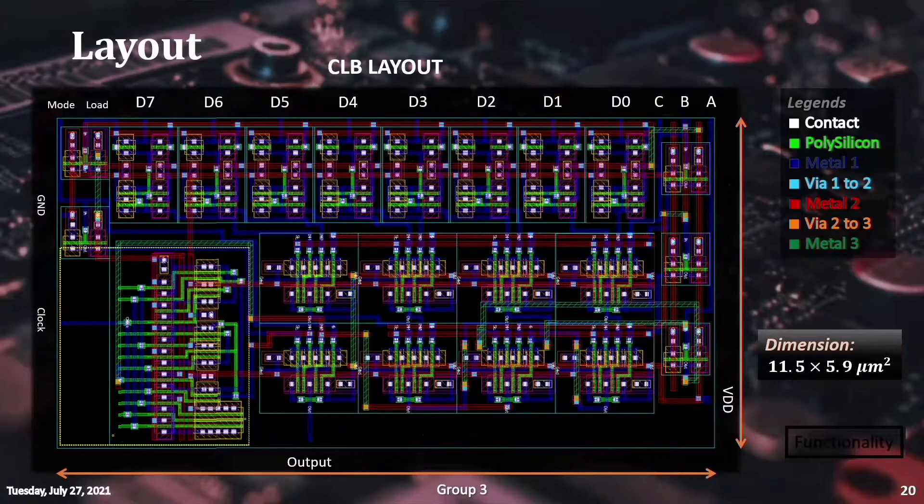Now we take a look at the final layout design of our CLB unit. In the layout, utmost care was taken in an attempt to minimize the circuit area. The final layout uses up to metal 3 layers for the block interconnects and it is housed inside an area of 11.5 micrometer height and 5.9 micrometer width.